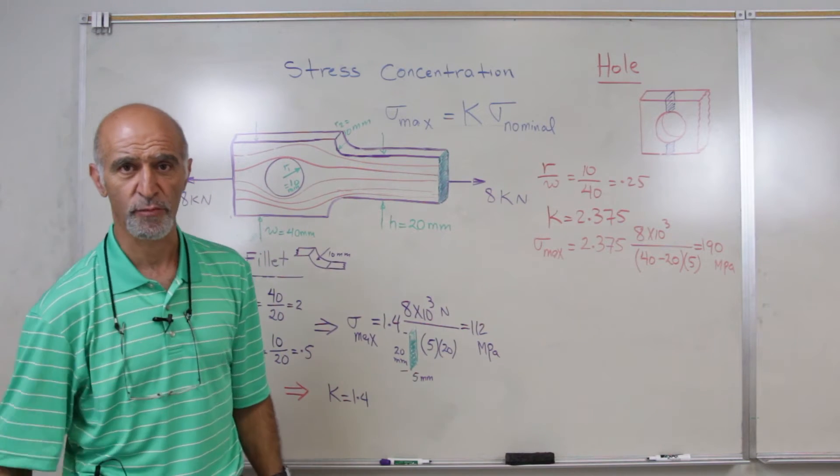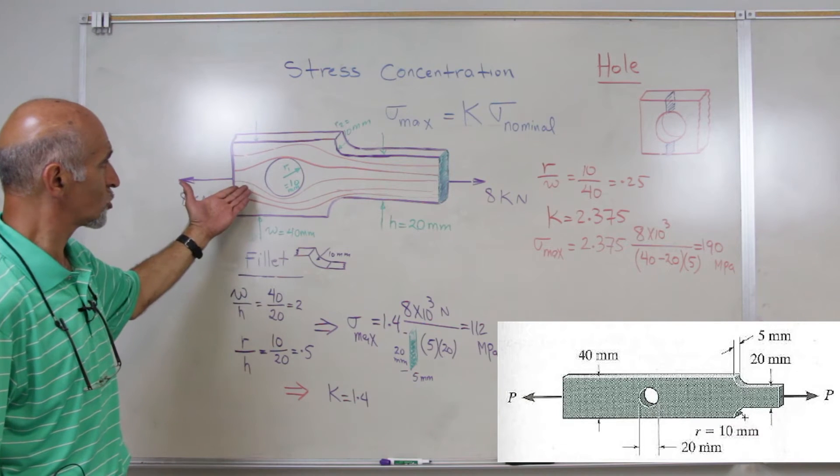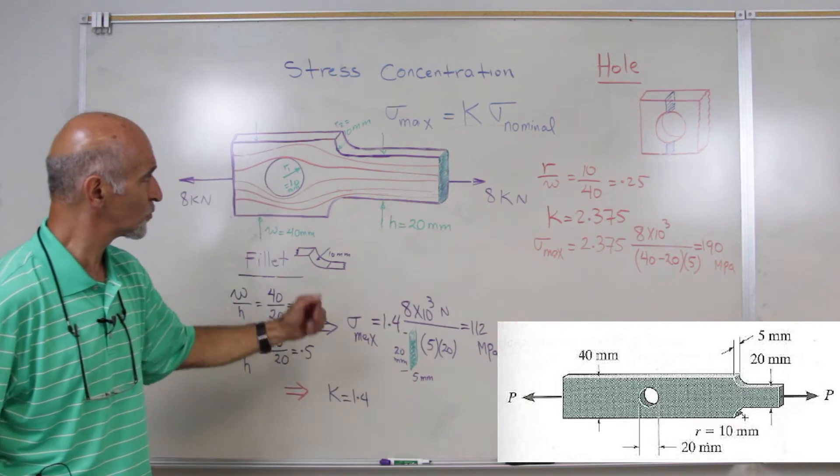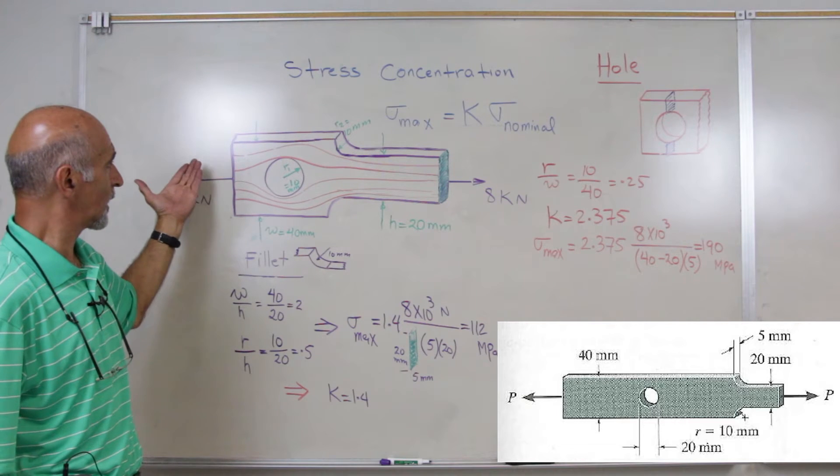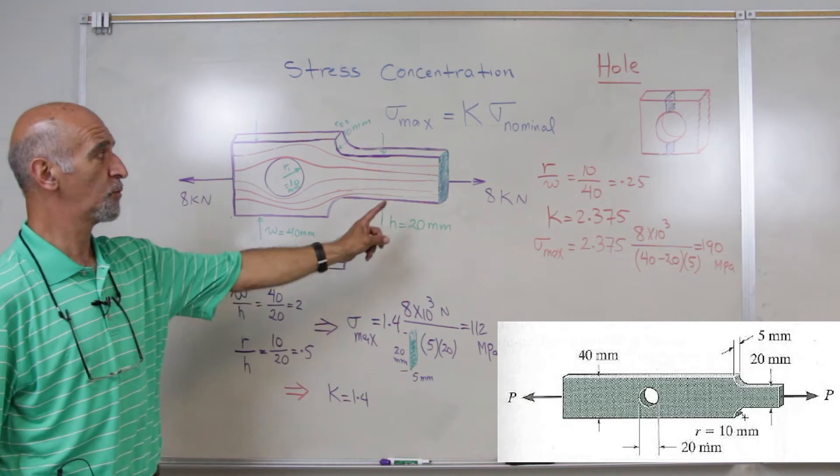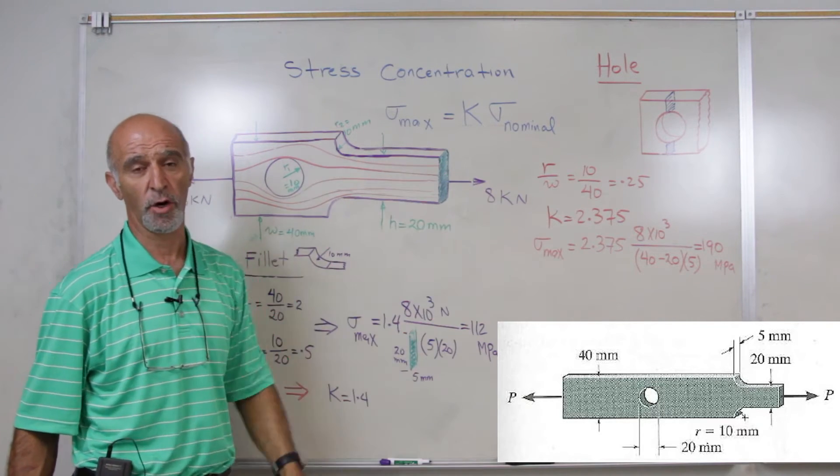Okay, let's look at an example. The example that we have for you is shown on the figure over here, as well as on the board. There are two stress concentrations that will happen in this bar as we put 8 kN of force pulling this bar apart.